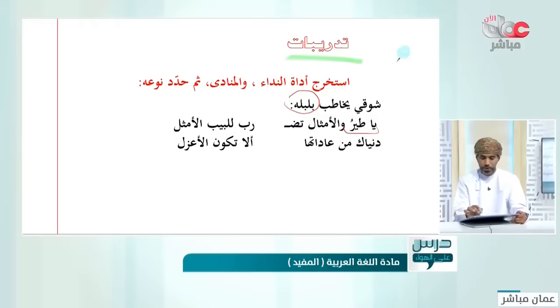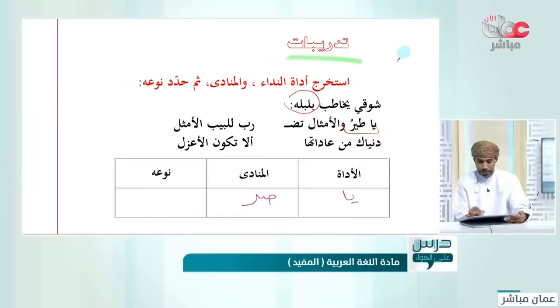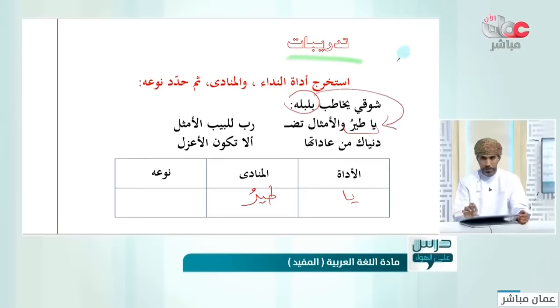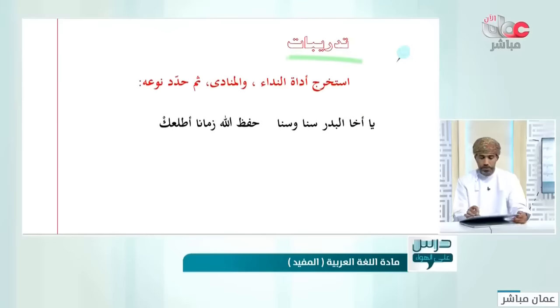شوقي خاطب بلبله يقول: يا طير والأمثال تضرب للبيب. الأداة 'يا' والمنادى 'طير'. هل هنا علم أم نكرة مقصودة؟ هنا لم يسمَّ بلبل بإسم معين وإنما باسم عام، لكنه يخاطب بلبلاً معيناً، إذن نوعه نكرة مقصودة.